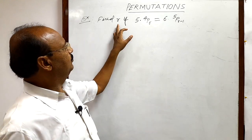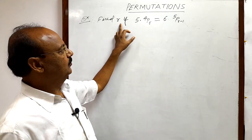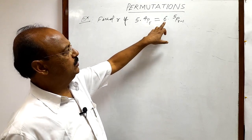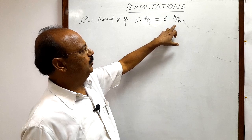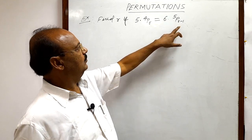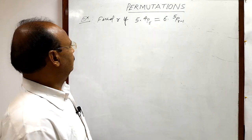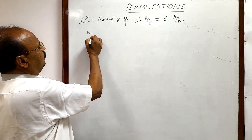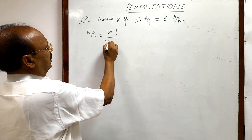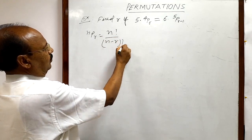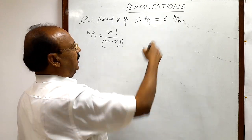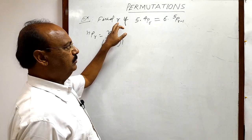In this question we have to find the value of r if 5 into ₄Pᵣ is equal to 6 into ₅Pᵣ₋₁. We have to use the formula nPr, where nPr equals n factorial divided by (n minus r) whole factorial. Let us solve it and find out the value of r.